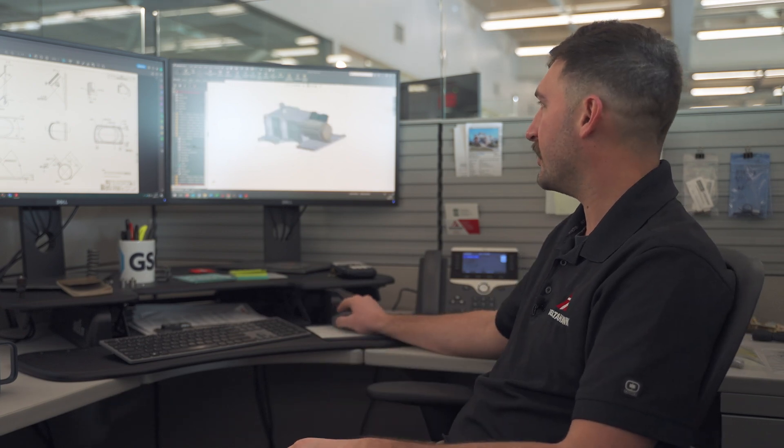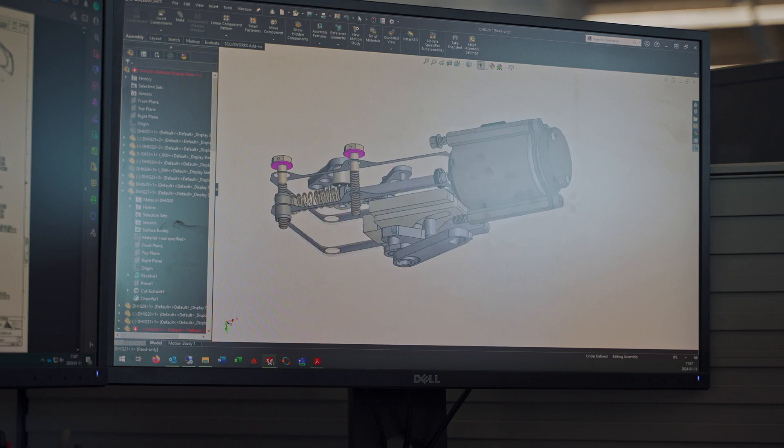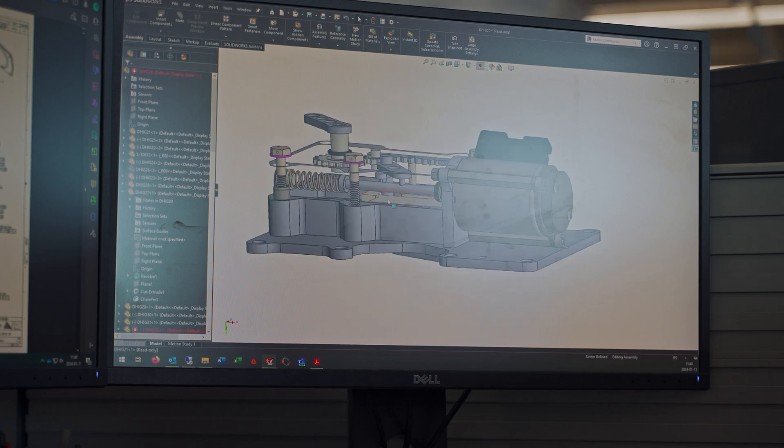One of the roles of the research and development team is new part design implementation and testing, and all of our new part design starts in SOLIDWORKS with these 3D models. The model you see here is a project I'm working on right now. It's our new idle governor which serves as the interface for the pilot to the engine and also helps us control our idle set point.